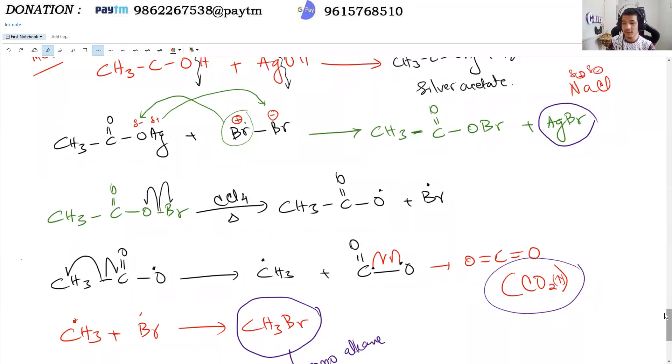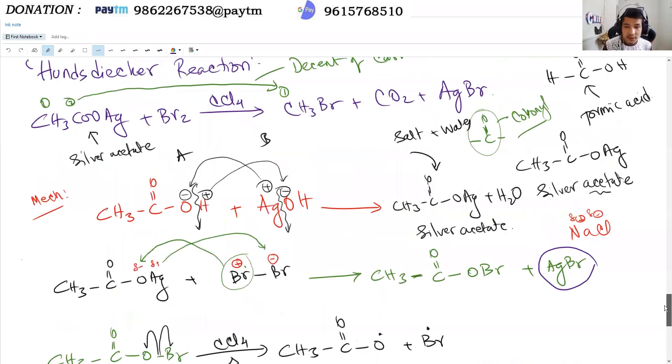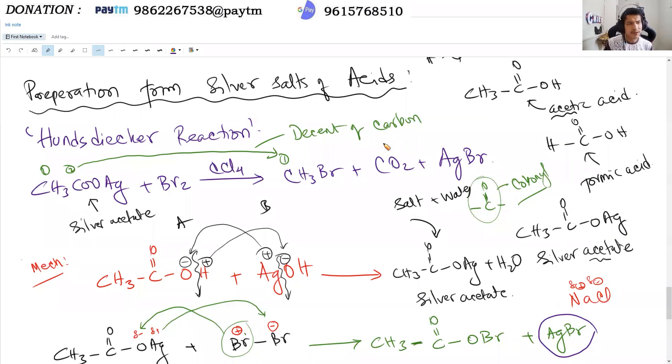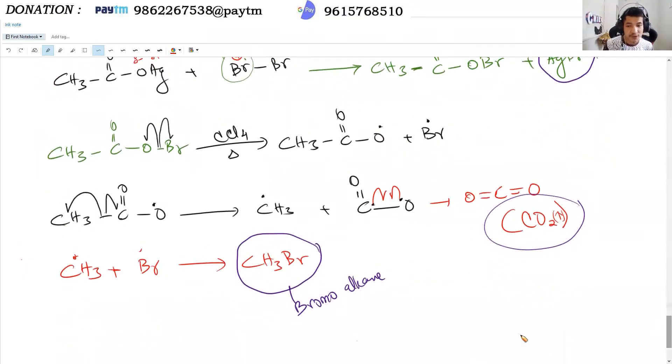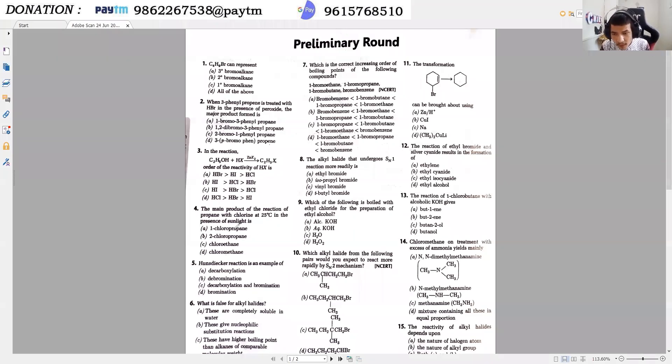The Hunsdiecker reaction mechanism is very important. The key processes are decarboxylation - the carbonyl group (the descent of carbon) is removed as CO2 - and bromination, where bromine is added. So the Hunsdiecker reaction is an example of both decarboxylation and bromination.